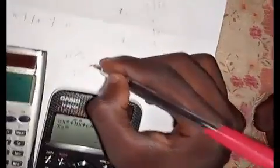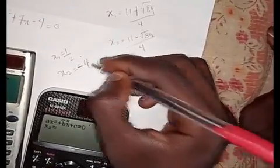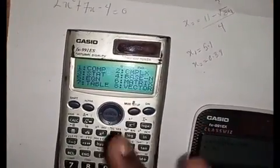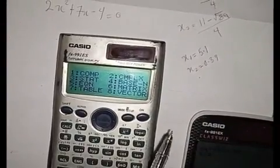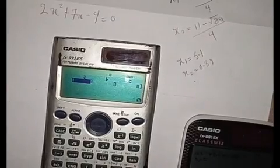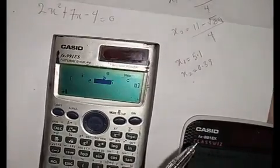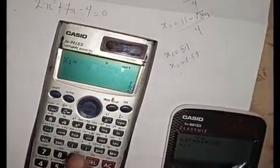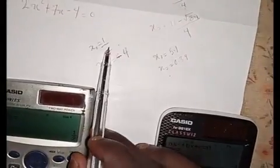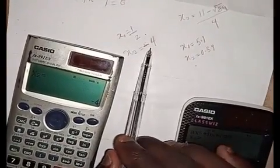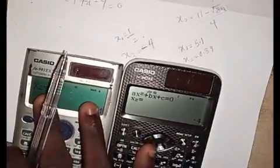Now let's do the same on the second calculator. Press Mode, then Equation number 5, then number 3. Enter your values: 2 equals, plus 7 equals, minus 4 equals. Press equals — you can see x1 is one-half. Press equals again and x2 is minus 4.